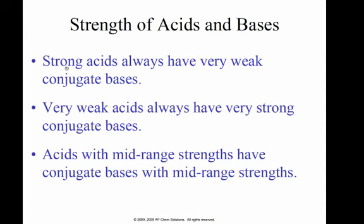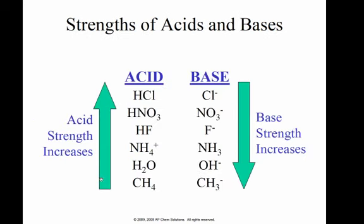The strength of the acid, if you'll remember, strong acids always have very weak conjugate bases. Very weak acids have stronger conjugate bases. And acids with mid-range strength have conjugate bases with mid-range strength. So therefore, the stronger the acid, the weaker its conjugate base.